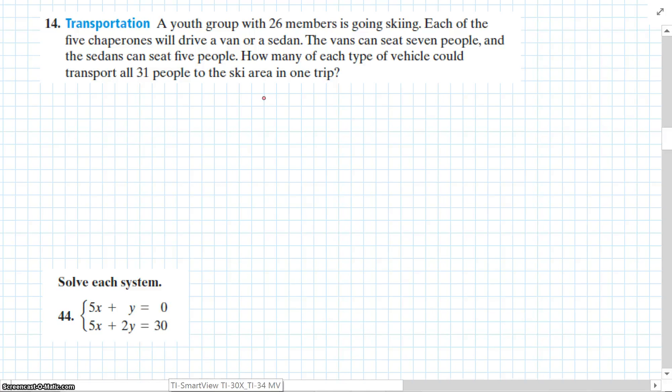Well, we know we can have sedans or vans, but we don't know how many of each, but we know we have five drivers. We also know five people fit in each sedan and seven people fit in each van, and we have a total of 31.